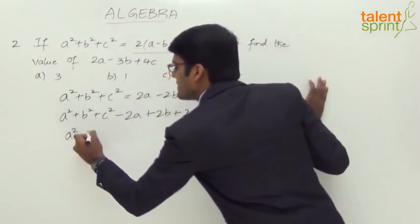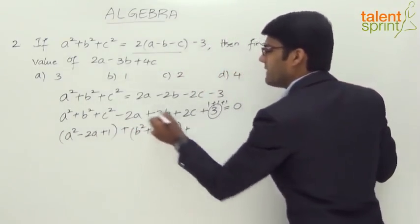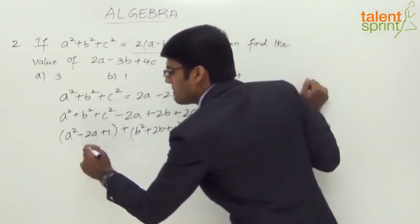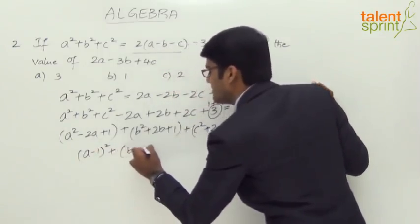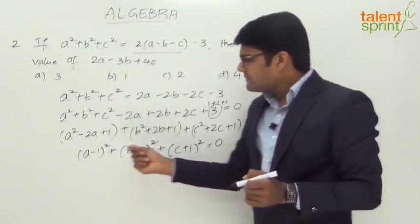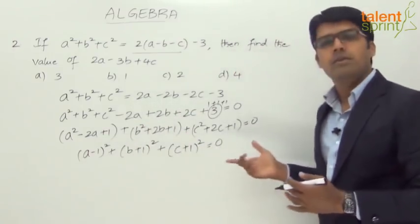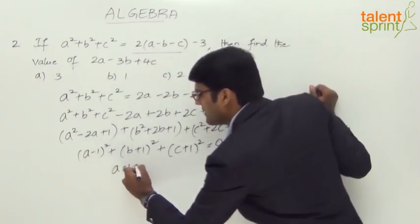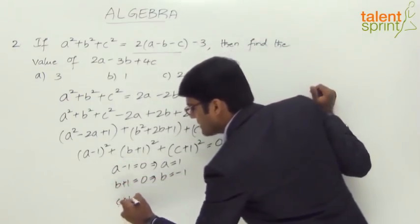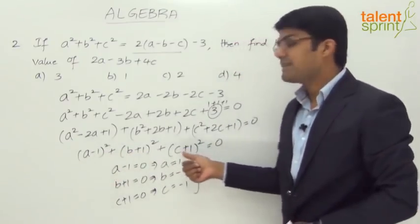This gives us (a-1)² + (b+1)² + (c+1)² = 0. Since the sum of three squared terms equals zero, each term must individually be zero. So a - 1 = 0 implies a = 1; b + 1 = 0 implies b = -1; and c + 1 = 0 implies c = -1.